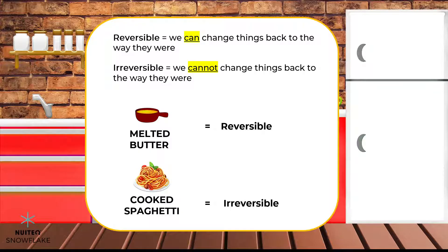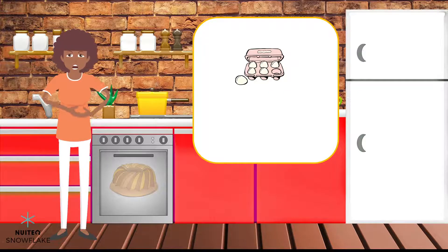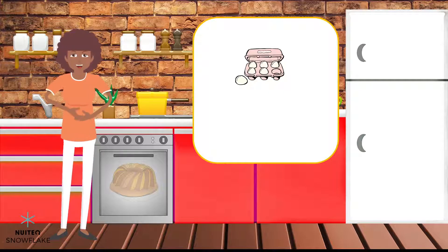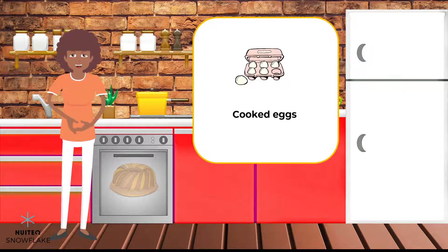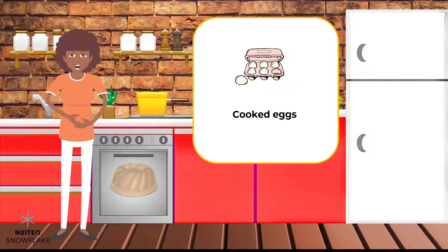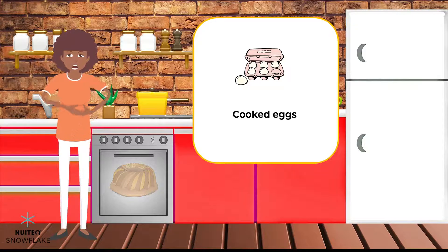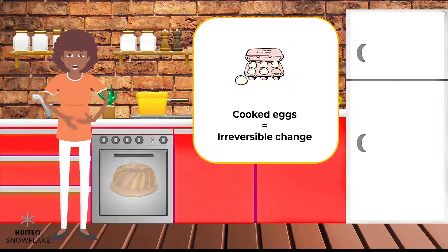Funny how that works, right? What do you think is going to happen to the eggs I have in the batter once the cake is baked? That's right. They will be cooked, because they are heated in the oven, and because I whisk them together with the sugar, they will make my cake nice and soft. Do you think I can turn the eggs in the cake back into raw, runny eggs? No. The eggs have changed irreversibly.